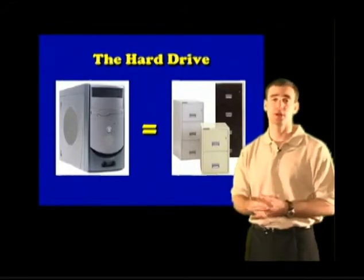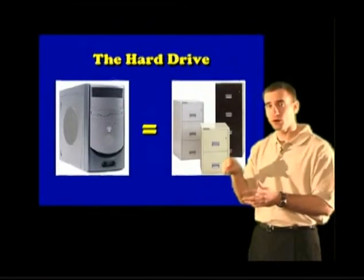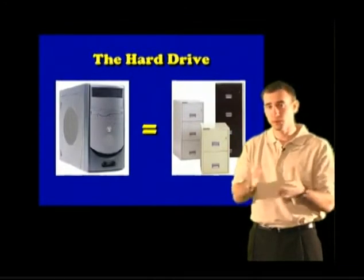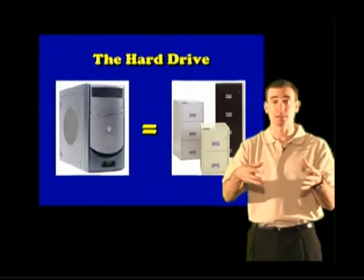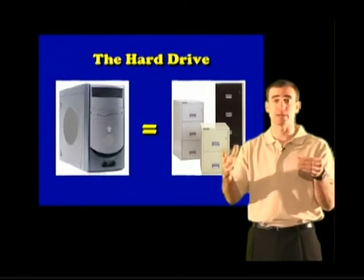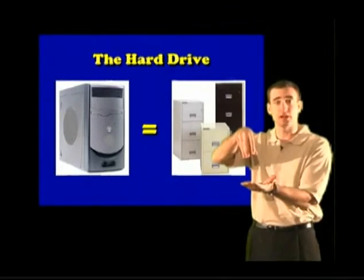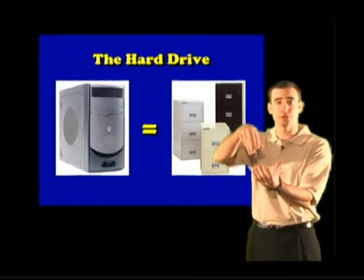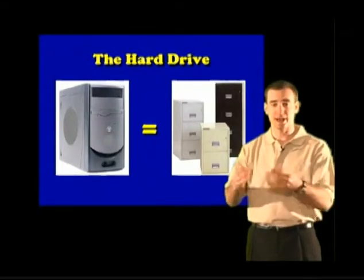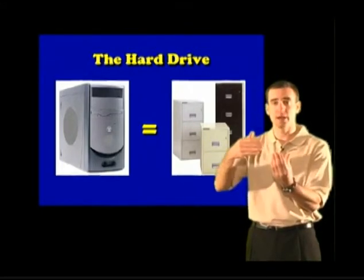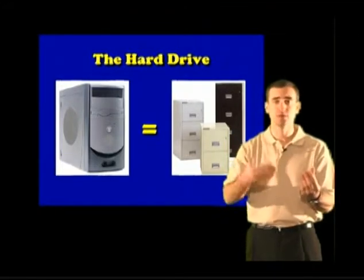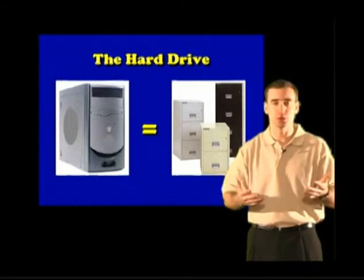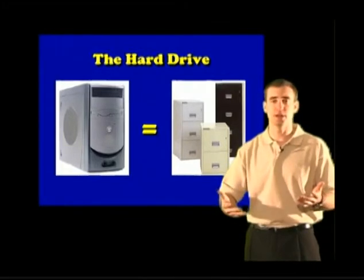You might have one folder labeled tax documents, another folder labeled favorite recipes, or whatever you like. The same thing holds true for computers. Once you've opened up that drawer and found the folder you like, you can pull that folder out and look inside. You might just have your documents in there, or if you've been doing taxes for years, you might have more folders inside that original folder — a main folder called tax documents with ten more folders inside, one labeled 2004, one labeled 2003, one labeled 2002, one labeled 2001, and so on.